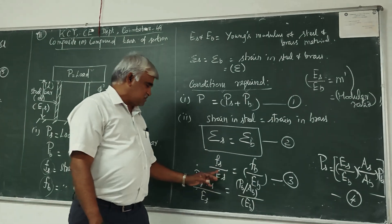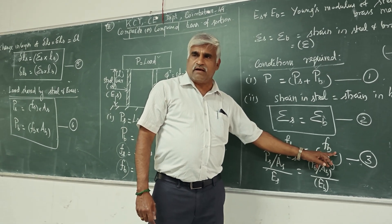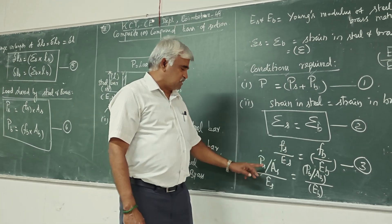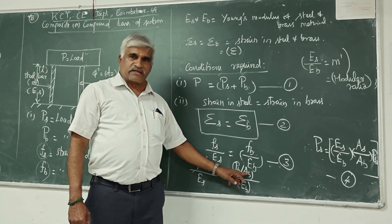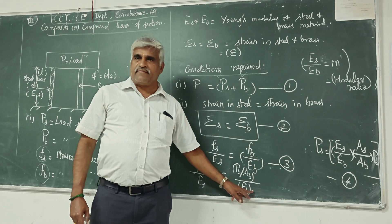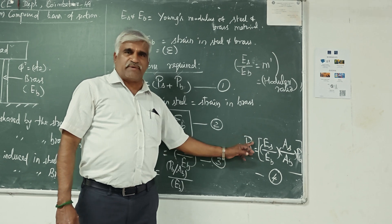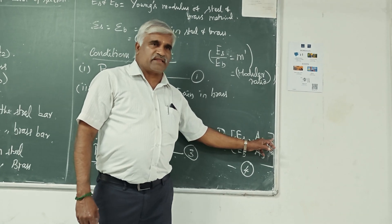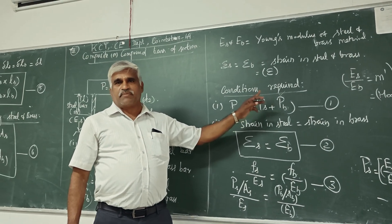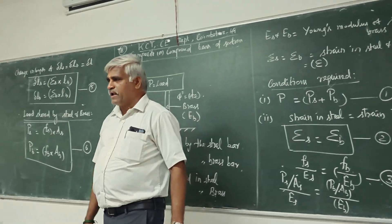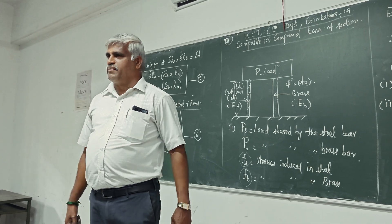From equation 3 — that is, Fs/Es equals Fb/Eb — the strain in steel equals the strain in brass. Fs is load divided by area of steel, divided by Young's modulus of steel; that equals load divided by area of brass, divided by Young's modulus of brass. From this, you can calculate the load shared by the steel material in terms of the load taken by the brass material, and substitute into the total load equation to get the unknown values of Pb or Ps.